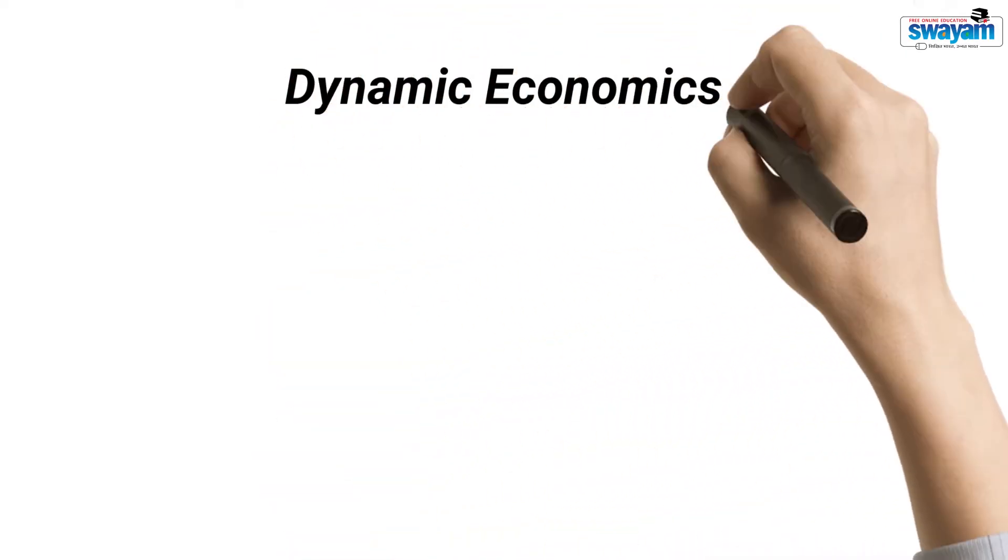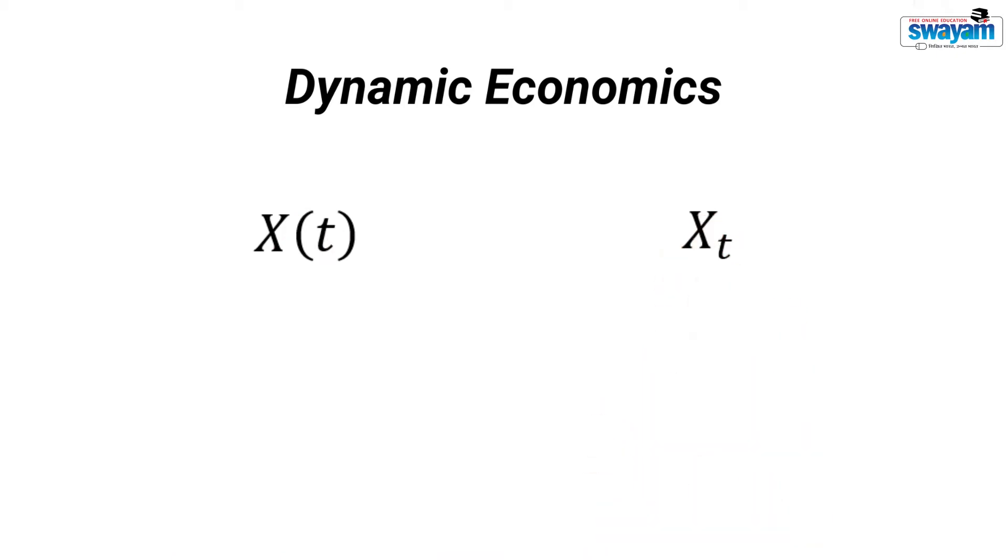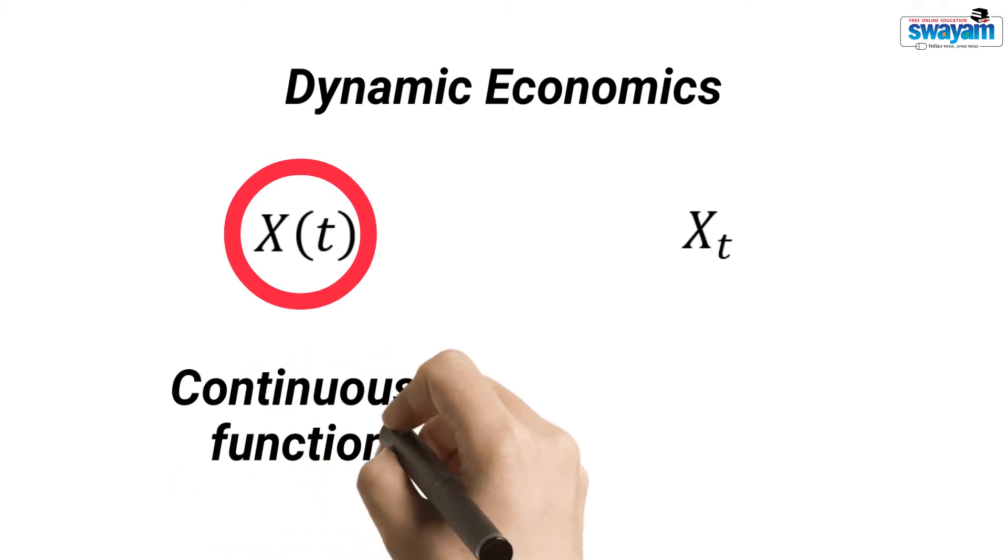In dynamic economics, you will come across these two terms. X is a random variable and t is the time. If t is written in brackets, it generally denotes a continuous function.